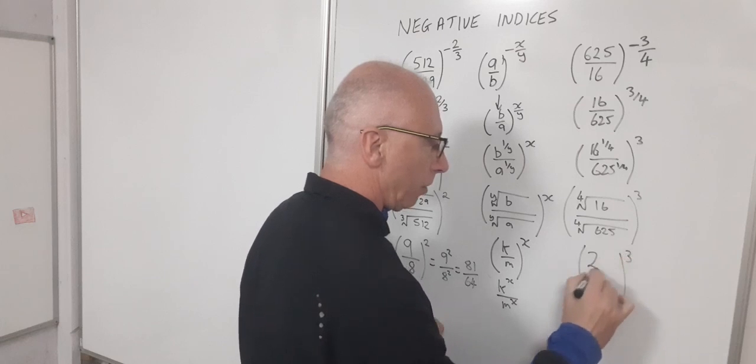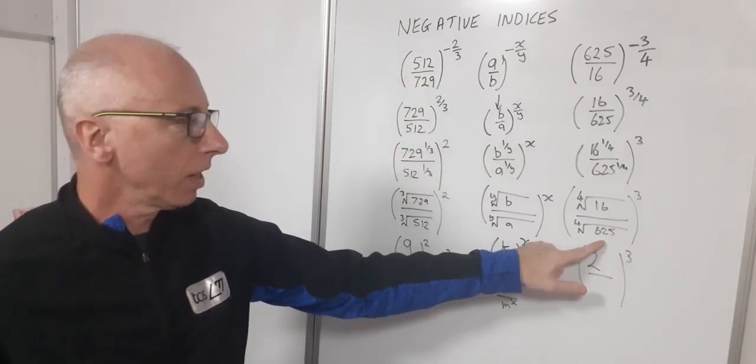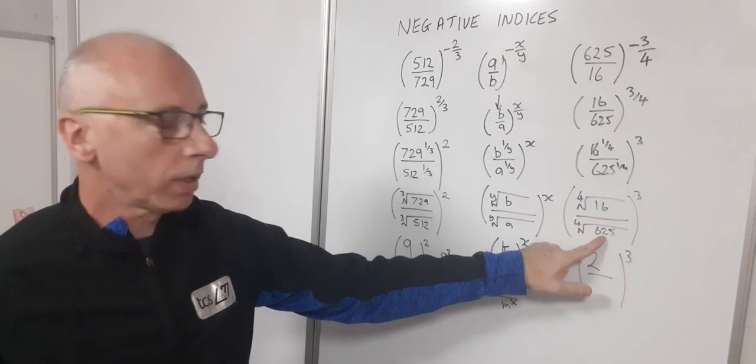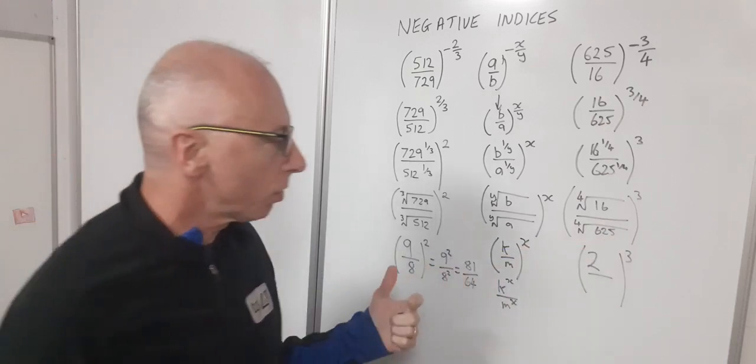And then for my denominator is 625, five fives are 25, 25 times five is 125 and times by five again is 625. So the fourth root of 625 is five.